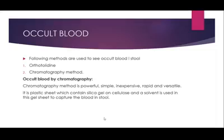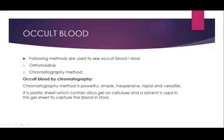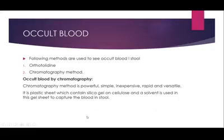Occult blood refers to hidden blood not normally visible to the naked eye. It can be detected using special tests and is mainly associated with intestinal malignancies or polyps. The methods used to detect occult blood in stools include the ortholidine test or chromatography methods. The chromatography method uses a plastic sheet containing silica gel on cellulose and a solvent. A small stool specimen placed on this sheet will capture the blood and indicate whether occult blood is positive or not.